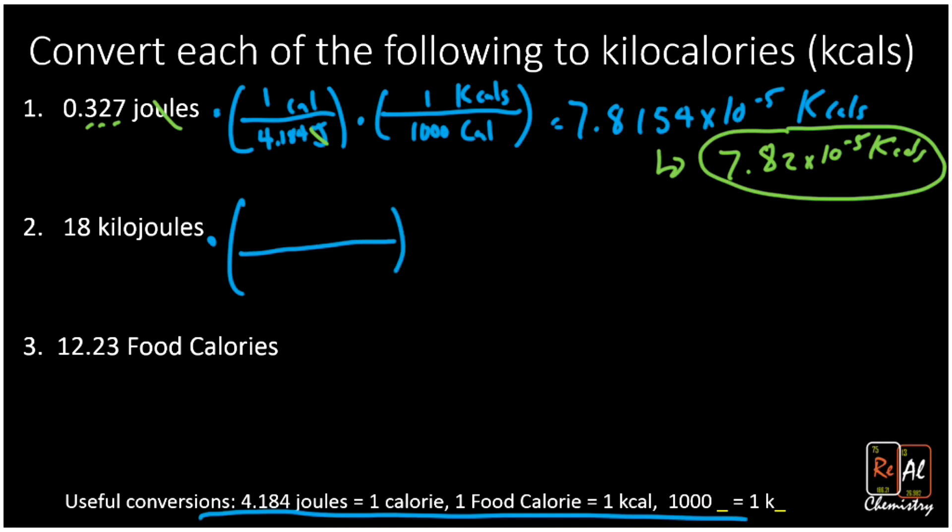So I want to get rid of kilojoules and go to joules - there's a thousand of the joules in one kilojoule. Now that I'm in joules, just like I did above, I want to go to calories. So one calorie, 4.184 joules. Now I'm in calories and I want to go to kilocalories. So again, just like above, I'm going to cancel out the calories and go to kcals, which means a thousand and one.